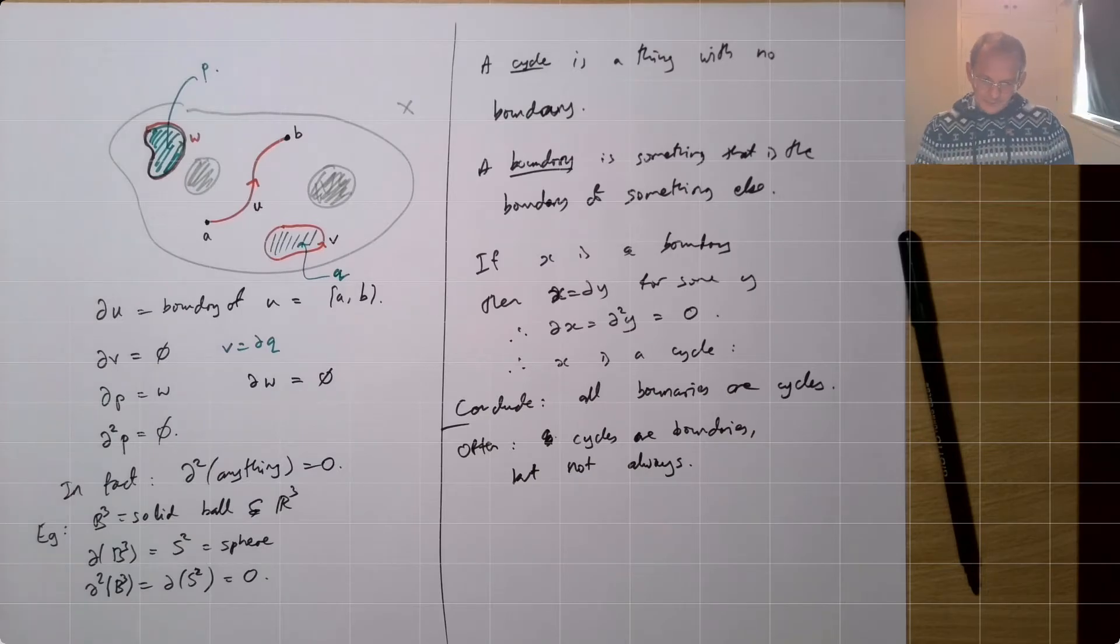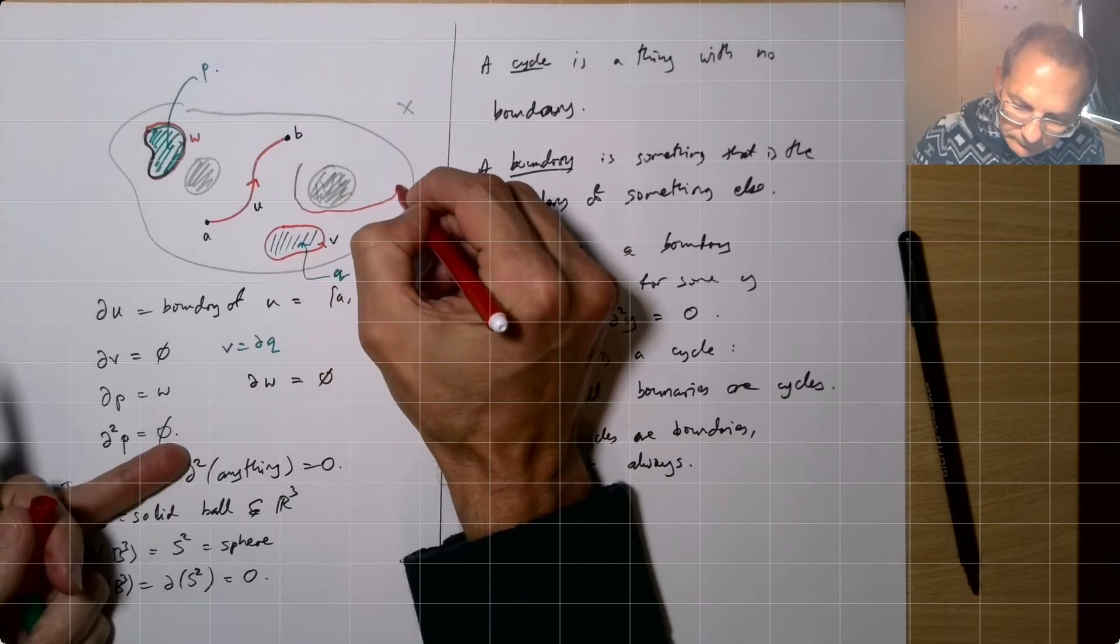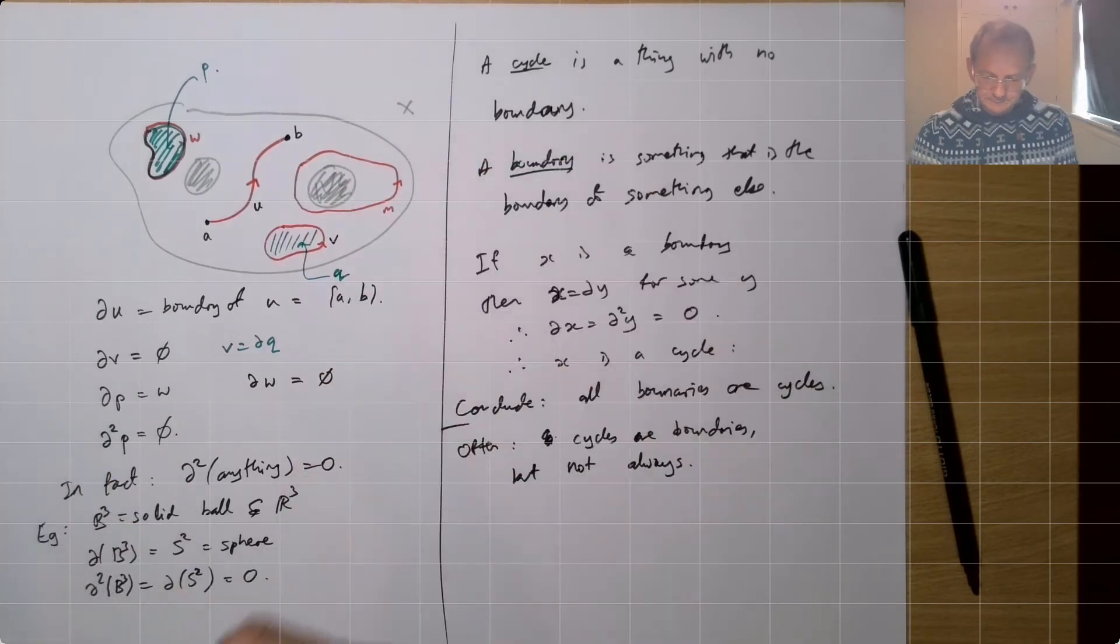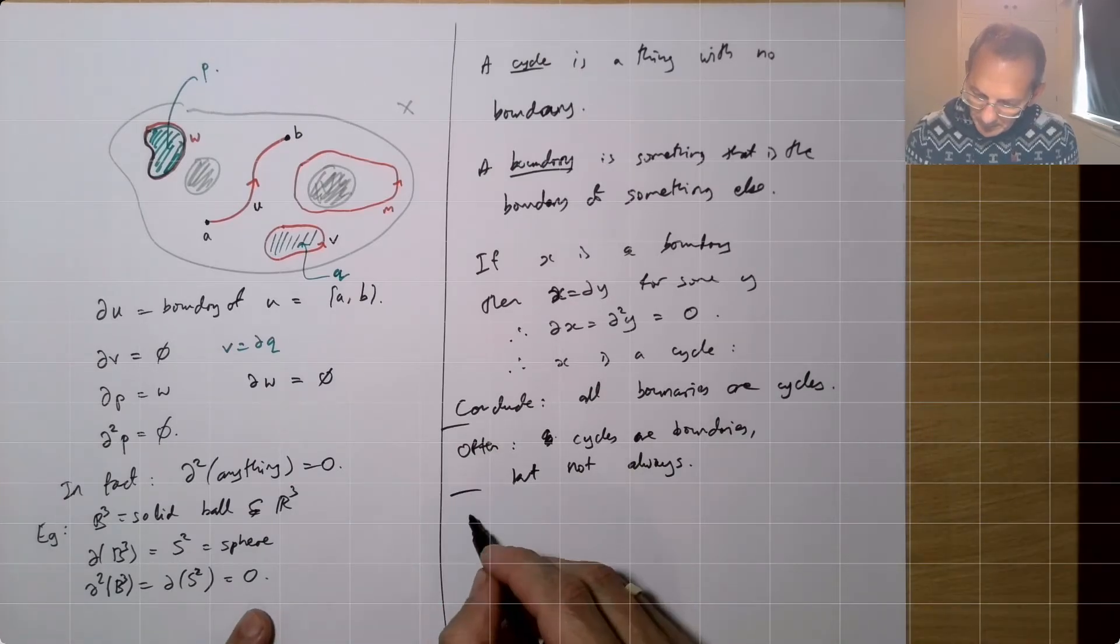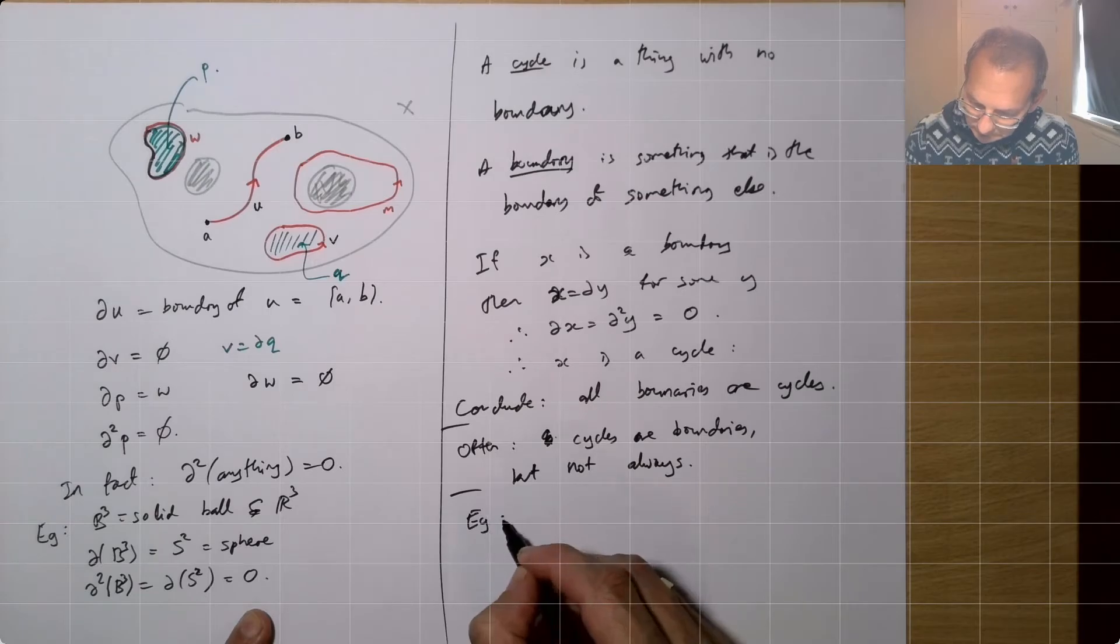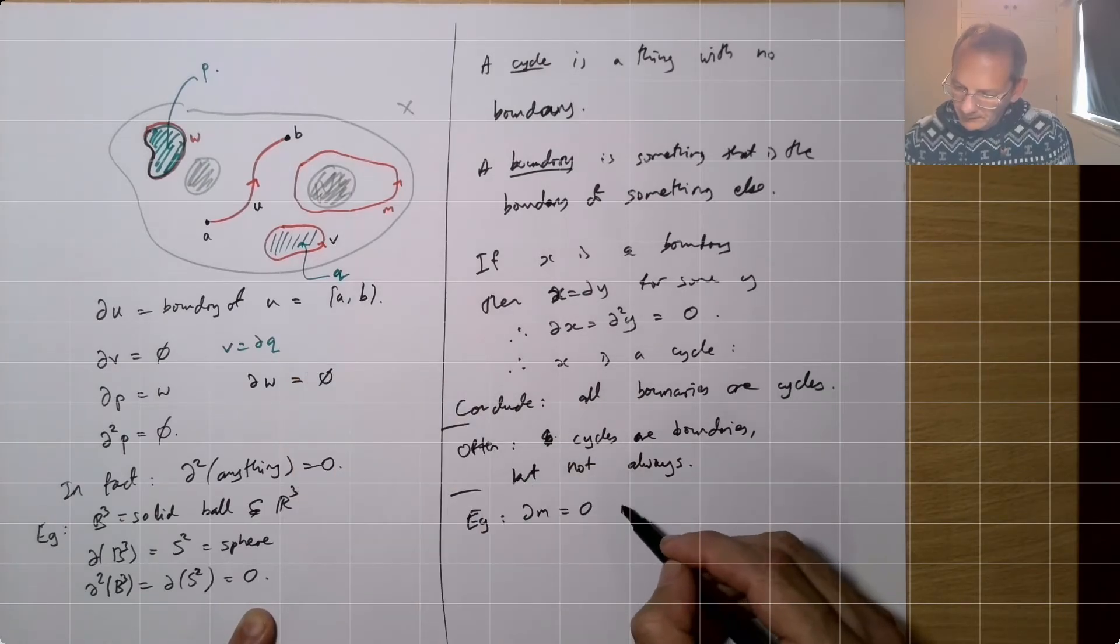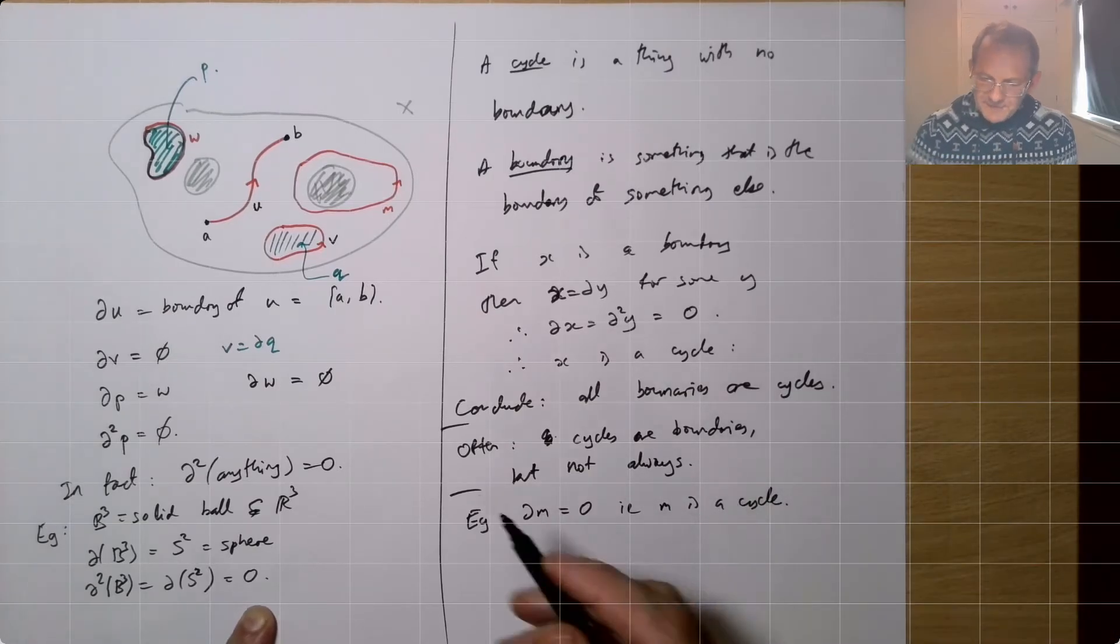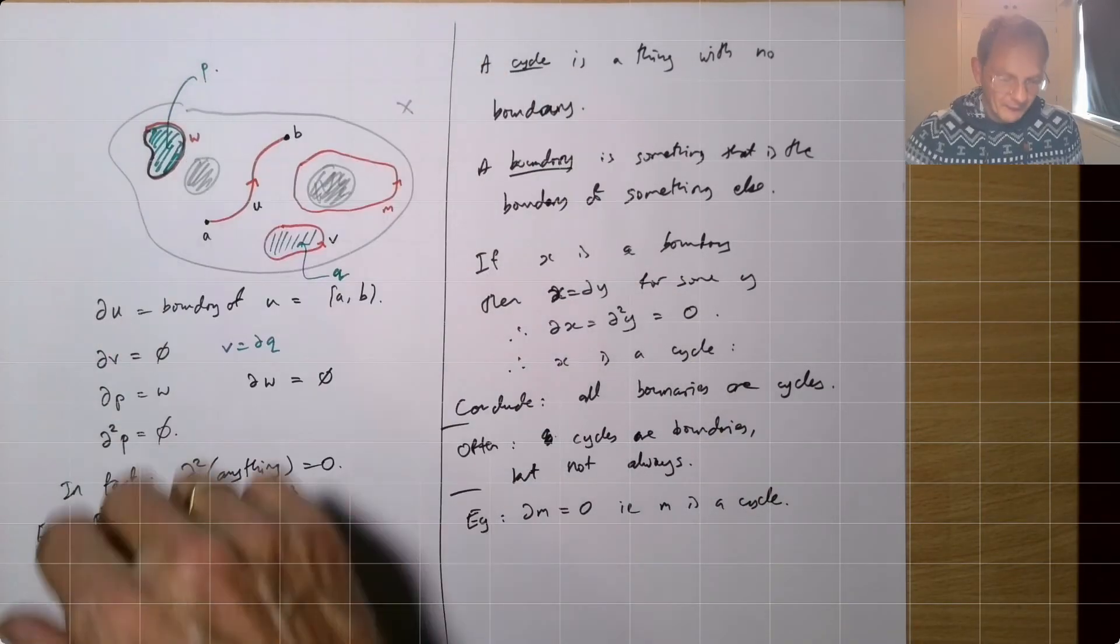But what happens if we do a path like this one? Let's call this one M. Now, so dM is zero. M is a cycle, and M sort of is a boundary. It's a boundary if we allow ourselves to use the whole plane. We can just fill in the middle of the M.